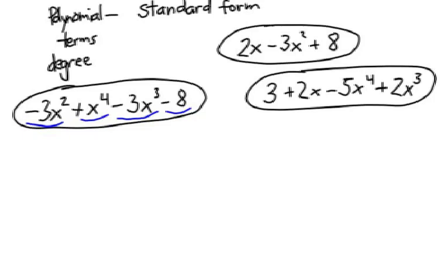Now I look at the powers, and I notice there's a second power, a 4th power, a 3rd power, and no power or even an x term at all. So I want to put those in order.